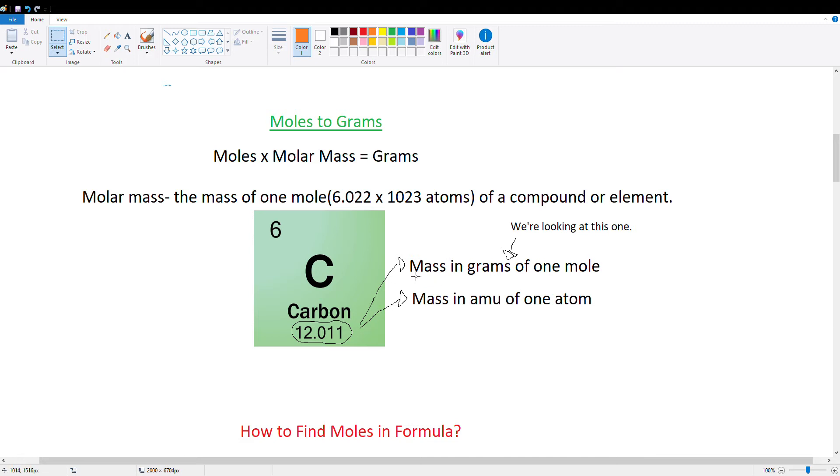And it does have two meanings. One of them is the mass in grams of one mole. The other is the mass in AMU of one atom. We're just going to be looking at this. Don't worry about this. I'm just telling you that it has two different meanings over here.